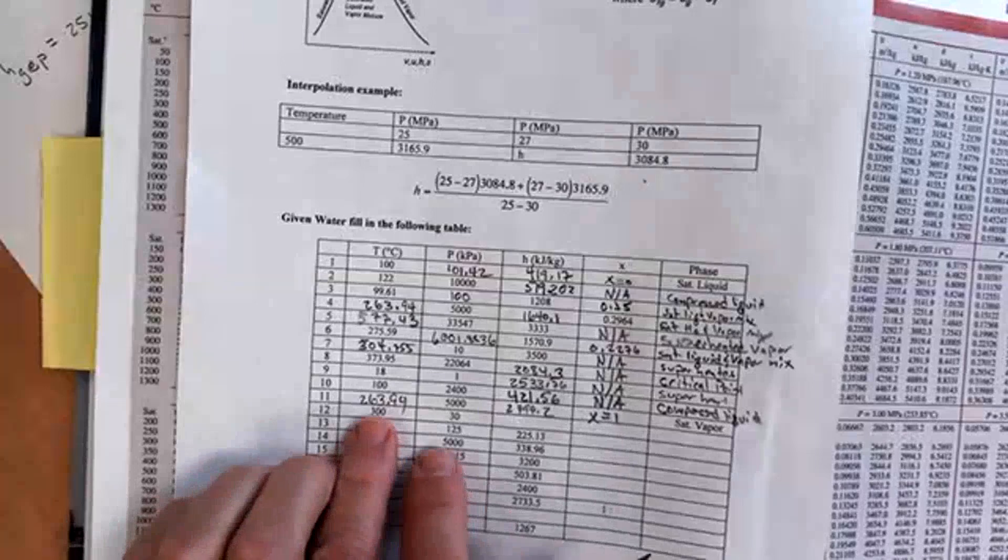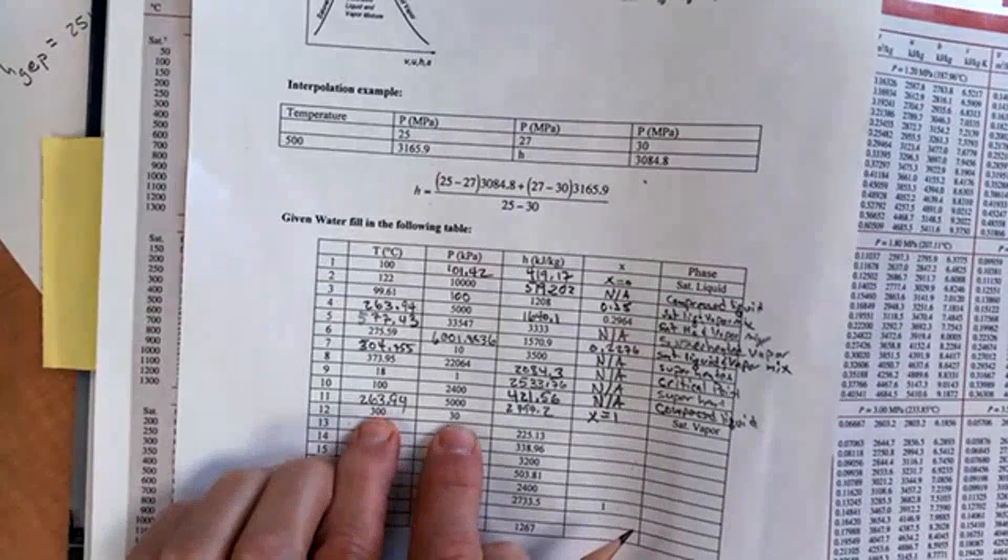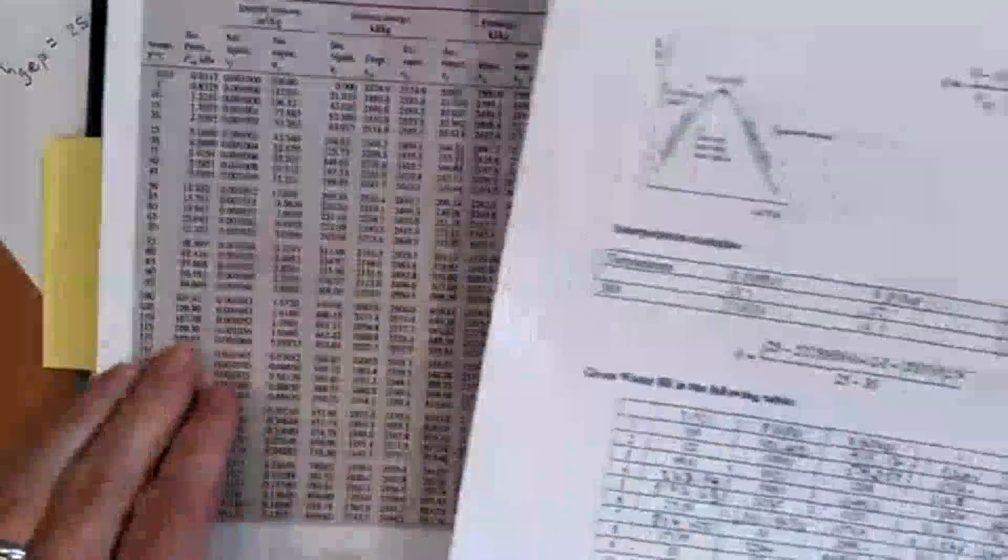OK, we're up to number 12 here. Number 12 says you're given 300 degrees and 30 kPa. So I'm going to do what I always do here. I'm going to start with the steam tables.